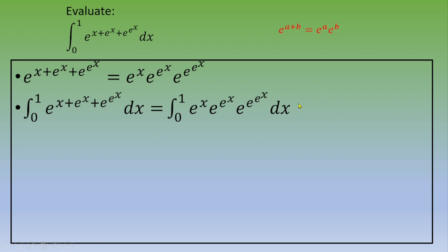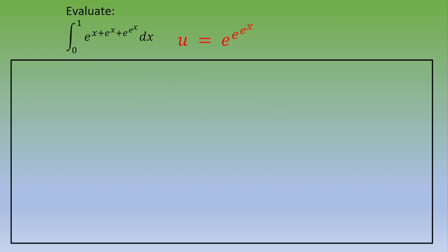One way to solve this is to use the method of substitution — a u-substitution. So let's do that. We set u equals e to the e to the e to the x.